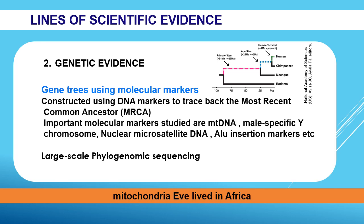Another line of scientific evidence which is gaining ground nowadays is genetic evidence. Gene trees are being constructed using molecular markers to trace back the most recent common ancestor, referred to as the MRCA. Important molecular markers studied are the mitochondrial DNA, Y chromosome, nuclear microsatellite DNA, and insertion markers. Large-scale genome studies are now being conducted to solve many unknown questions of human history. Genetic studies conducted with mitochondrial DNA have been used to trace back our most recent common ancestor to a female who lived in Africa, and that mitochondria has been named Mitochondrial Eve.